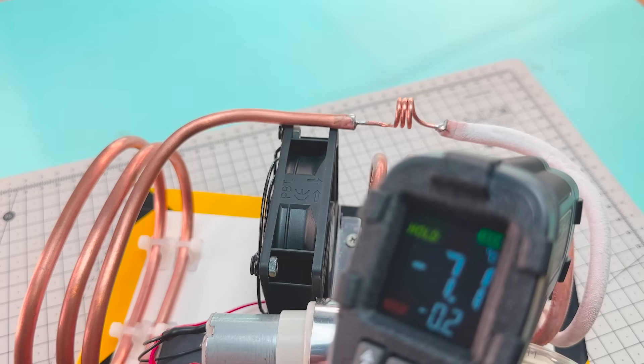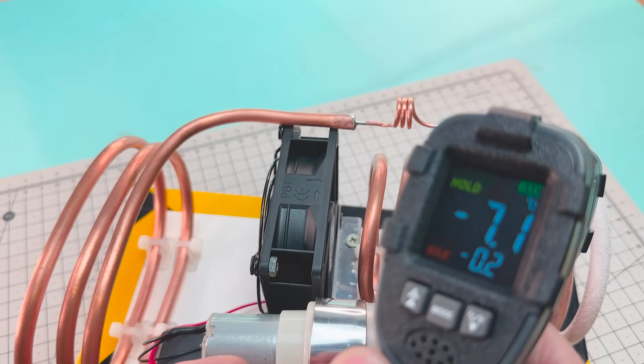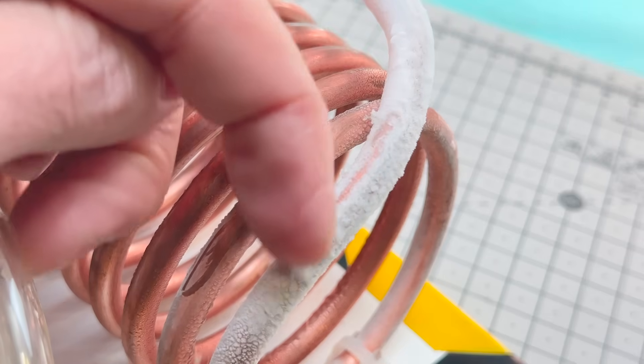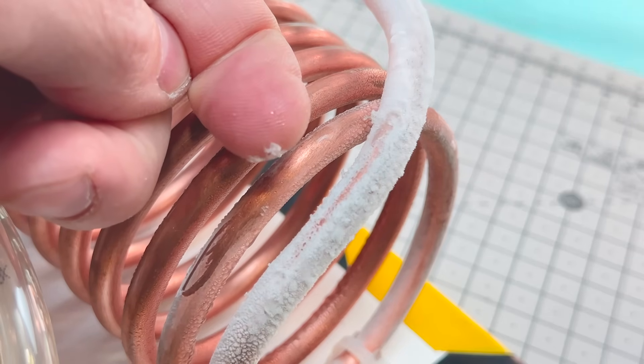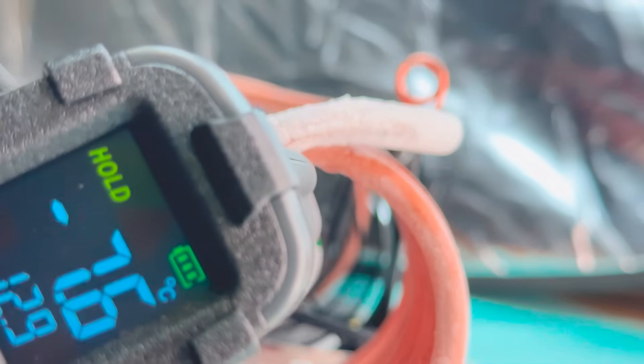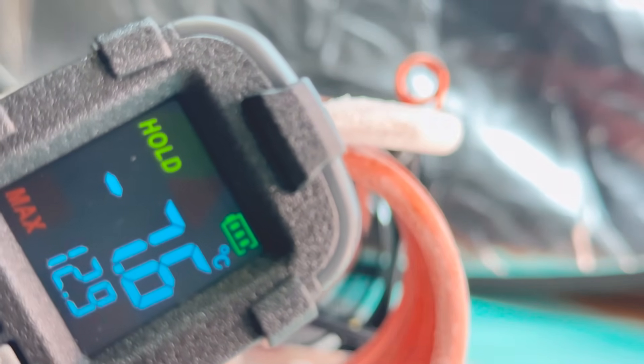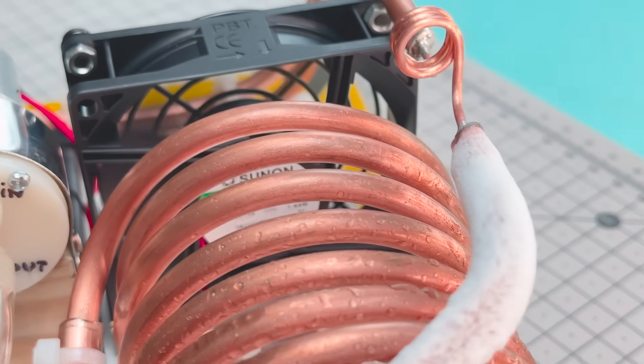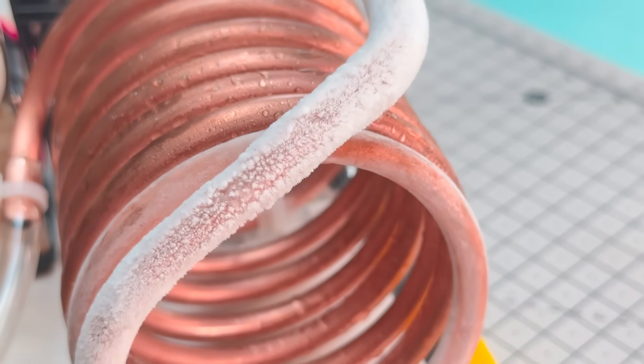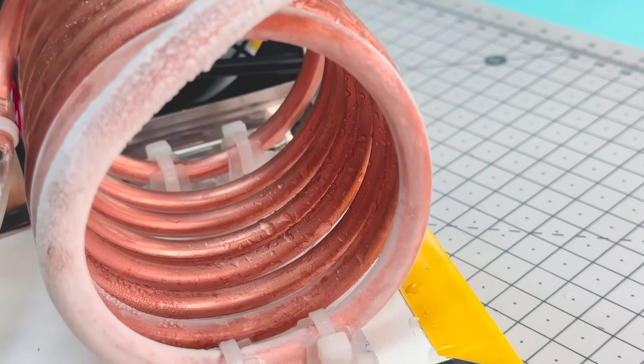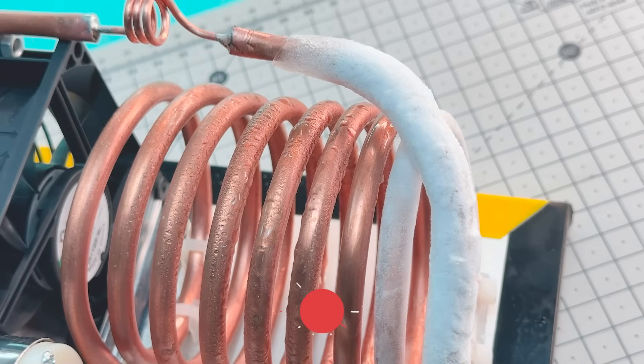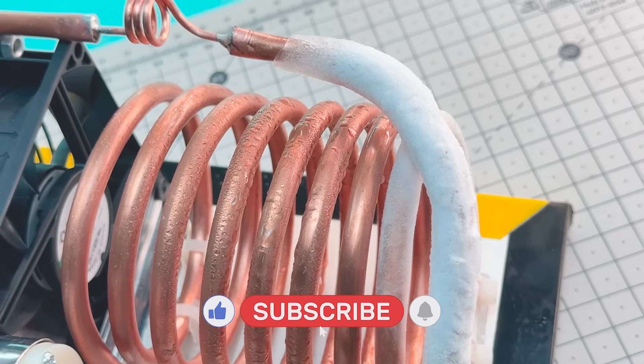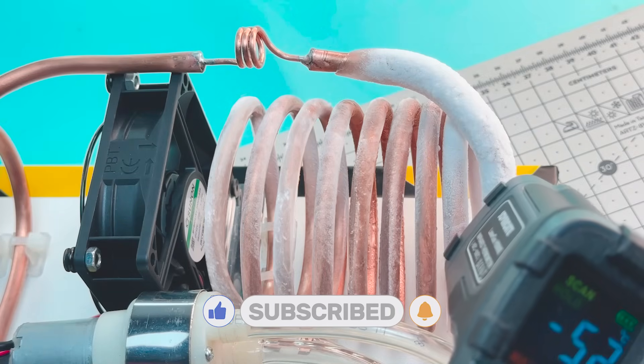In the first measurements, we get temperatures of minus 7 degrees Celsius. But if we give it some time, we'll see the tubing get colder and colder. Until finally there it is, minus 10.